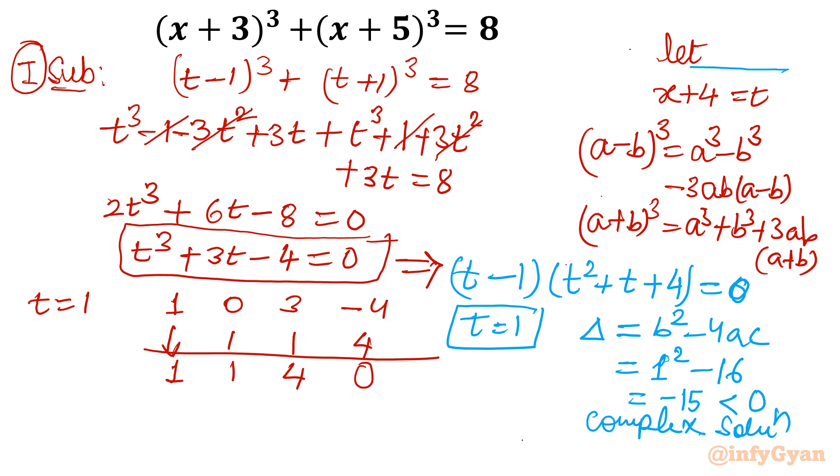And remember this thing, t is our substitution. So what I will do now, I will substitute the value of t. So I will write x plus 4 equal to t, that means 1. So the real solution which will come out, that is negative 3. We are solving for real solution.